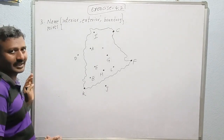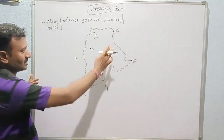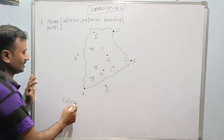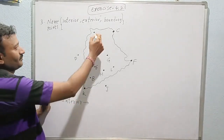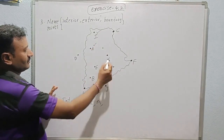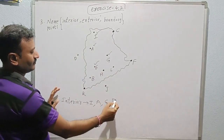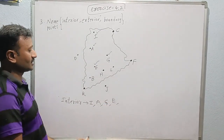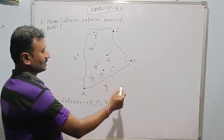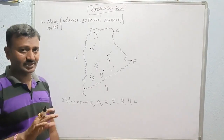Let us discuss what are interior points. Interior points are those which lie inside the boundary. Can you say what are the interior points? The first is I, second is A, third is G, fourth is E — these are interior points. Next, B, H, and L. These are all the points which lie inside.